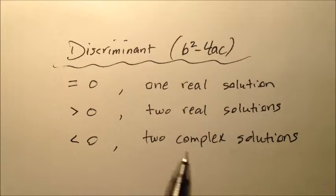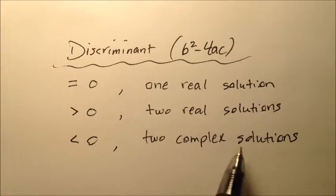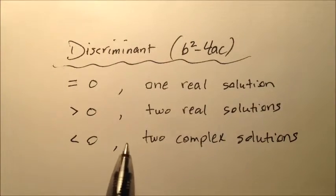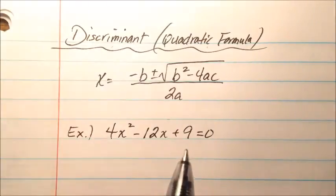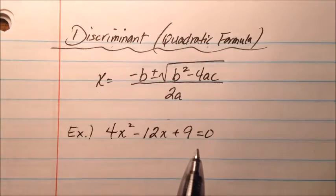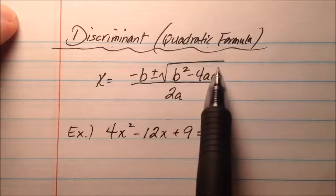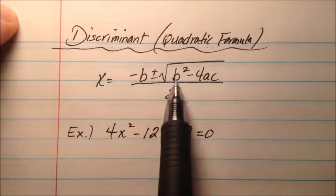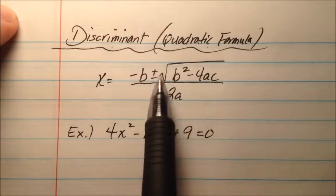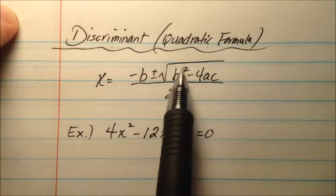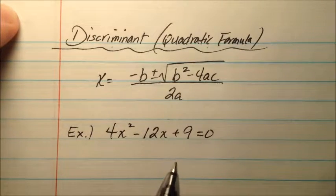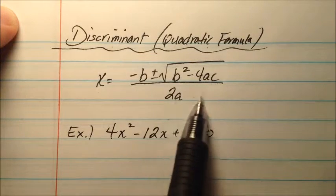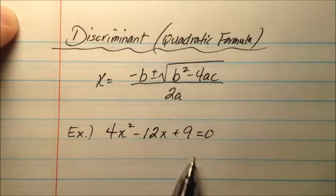What does it mean to have two complex solutions? If your discriminant is negative, that means b squared minus 4ac is negative underneath the radical, which gives you an imaginary number — and that sets up complex solutions.